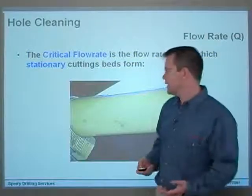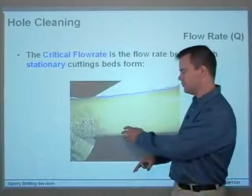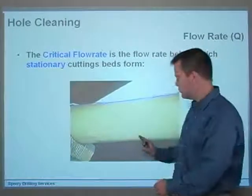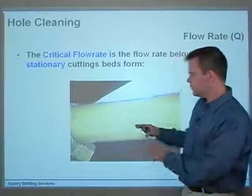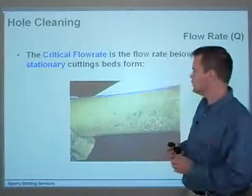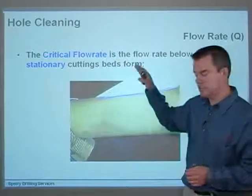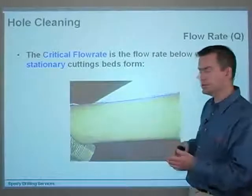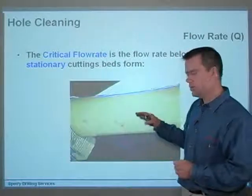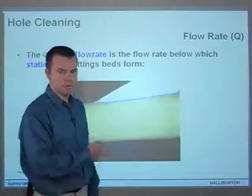So what flow rate is actually high enough? We've got cuttings beds forming, basically forming dunes, and they roll up the wellbore with saltation of grains over the top. We're pretty close to what the critical flow rate actually is. The critical flow rate is the rate below which stationary cuttings beds form — 'stationary' is the key word here. This is critical flow rate for hole cleaning, not critical velocity for turbulent versus laminar flow. Now if we fall below the critical flow rate, let's watch what happens.